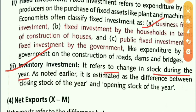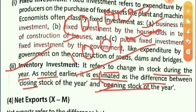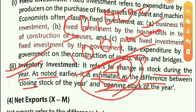Inventory investment refers to the change in stock during the year. It is estimated as the difference between the closing stock of the year and the opening stock of the year. For example, if the opening stock is fifty thousand and the closing stock is one lakh, then the inventory investment for that accounting year is fifty thousand.